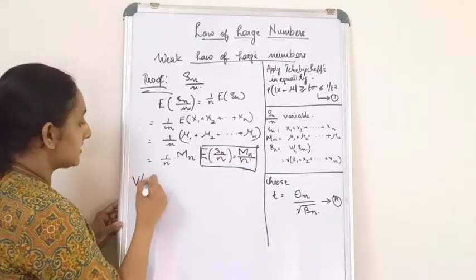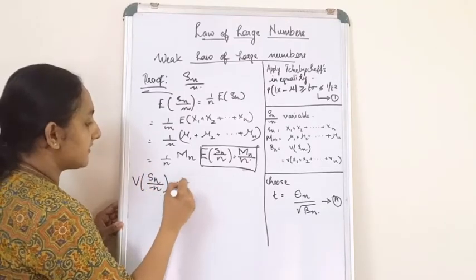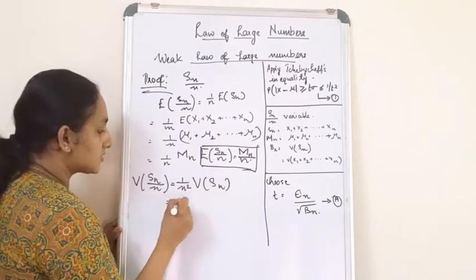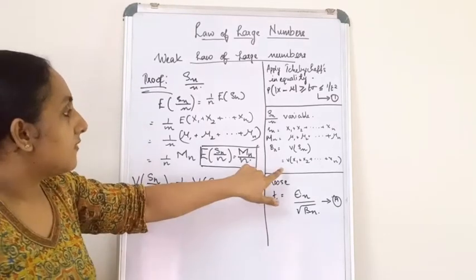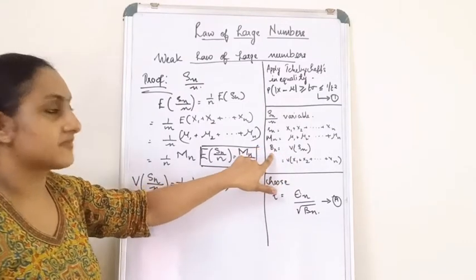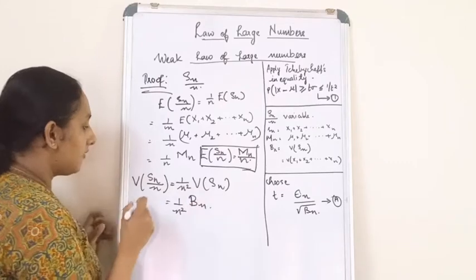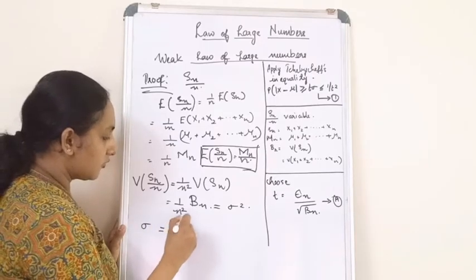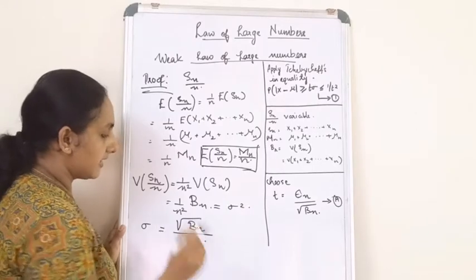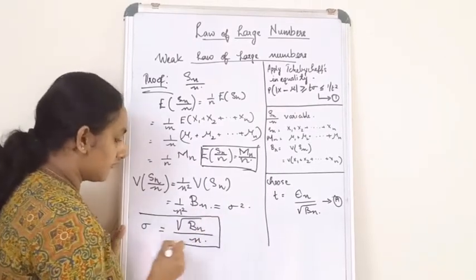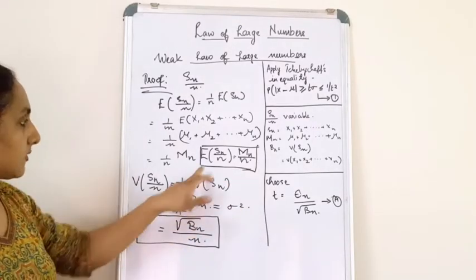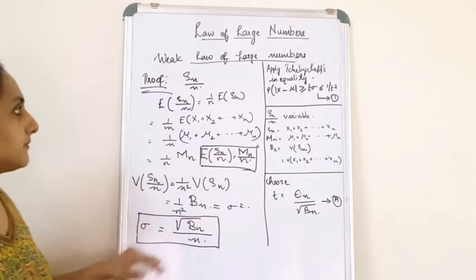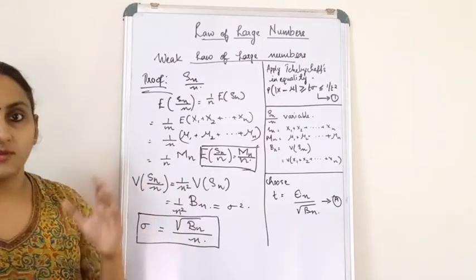Now we have to find the variance of Sn/n. To do that, I take n outside: it becomes (1/n-squared) times the variance of Sn. The variance of Sn is Bn, so the variance of Sn/n equals Bn/n-squared. Therefore sigma-squared equals Bn/n-squared, and sigma equals the square root of Bn/n. Now we are ready to apply Chebyshev's inequality to this proof.